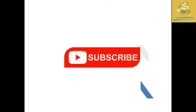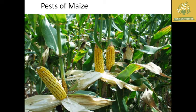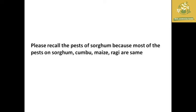In this video we are going to see about entomology's crop-wise pest. Now I am going to tell you about the pests of maize. One small note: most of the pests of sorghum, kombu, maize, and ragi are the same. I will only be telling about the differentiated maize pests from kombu, maize, and ragi. I have also attached the list of maize pests present in kombu, maize, and ragi separately. Please refer to the lecture notes of sorghum from the previous videos so you can recall them. This was mainly made to reduce the time students spend during examination preparation.